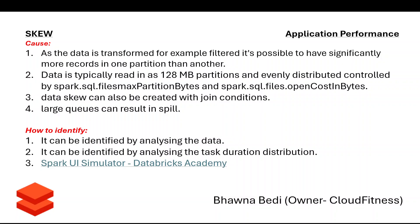Skew occurs whenever you are transferring data. For example, say you have 100 rows of data — 99 rows belong to location USA and one row belongs to location Australia. Now you've partitioned the data based on location. All USA-related information goes into one folder and Australia into another. But the problem is 99 rows are in one partition and just one row is in another. During processing, all 99 rows are sent to one machine while the single Australia record goes to another. One machine finishes very fast and sits idle while the other is still processing — that is the skew problem.